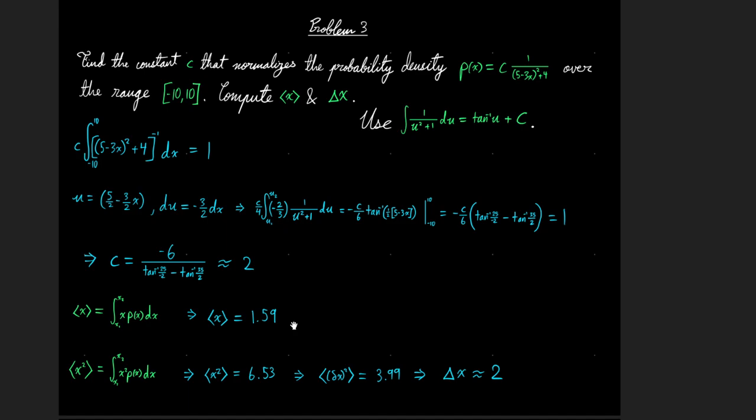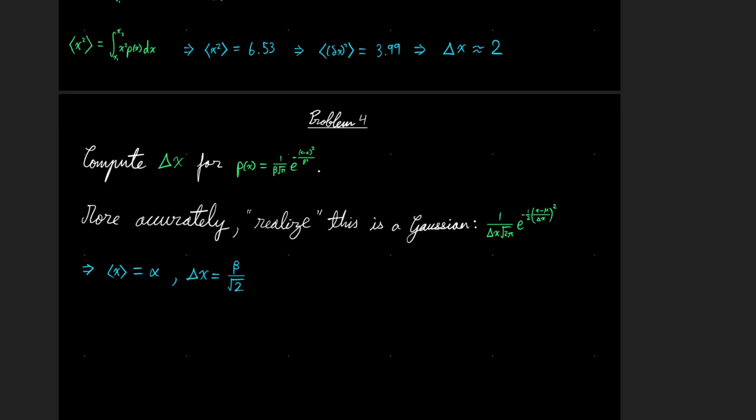The average value was 1.59. And then to find the standard deviation, you need to find the average of x squared. And you do that very similarly. And after finding the variance right here is 3.99, you find that the standard deviation is approximately two.